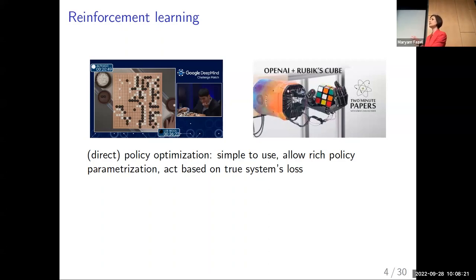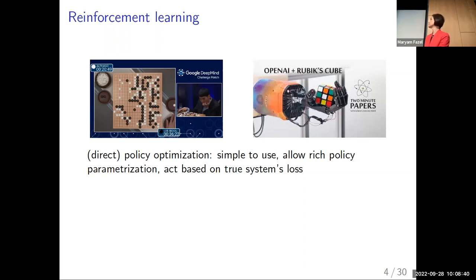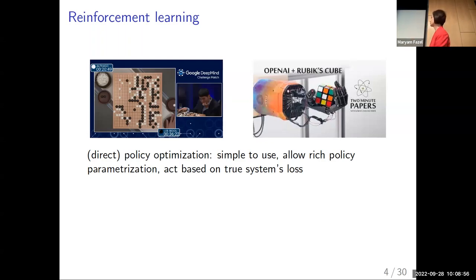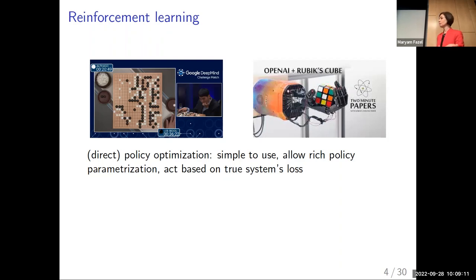Policy optimization means you parameterize the policy space directly and then do some kind of search or updates in that space. These methods are popular because they're very simple to use — often based on one loss function and its gradient, doing iterative gradient descent. Or even simpler, you update in a zeroth-order fashion based on just the loss values, without gradients. They allow rich policy parametrization — for example with a deep neural net — and they act based on the true system's loss function.